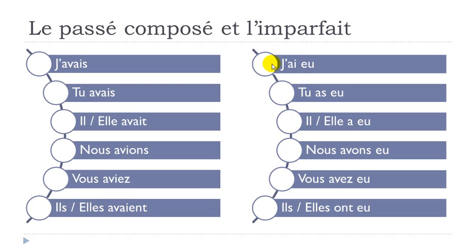Note that for nous avons eu, there is a double liaison. Same for vous avez eu and ils ont eu. Now let's see être. The imparfait form: j'étais, tu étais, il était, elle était, nous étions, vous étiez, ils étaient, elles étaient. Final S and T are not pronounced; there are liaisons with nous and ils. The passé composé: j'ai été, tu as été, il a été, elle a été, nous avons été, vous avez été, ils ont été, elles ont été. Note the double liaisons in nous avons été and vous avez été.